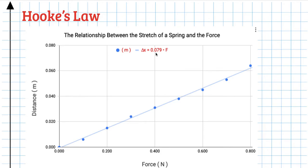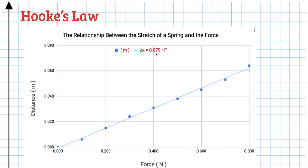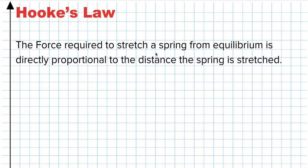That idea is called Hooke's Law, and it turns out this is a really important idea. It's true not just for springs, but bungee cords, elastic bands — it's even true for atomic connections, where atoms are connected to each other with bonds modeled by springs. So this applies to a whole bunch of physical phenomena.